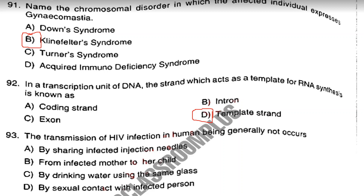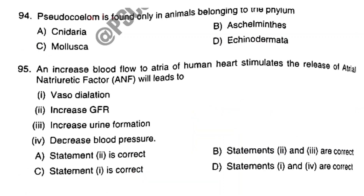Question number 93. The transmission of HIV infection in human beings generally does not occur by? Answer is Option C: By drinking water using the same glass. Question number 94. Pseudocoelom is found only in animals belonging to the phylum? Answer is Option B: Aschelminthes. Question number 95. An increased blood flow to atria stimulates the release of atrial natriuretic factor (ANF), which will lead to Option D: vasodilation and decreased blood pressure.